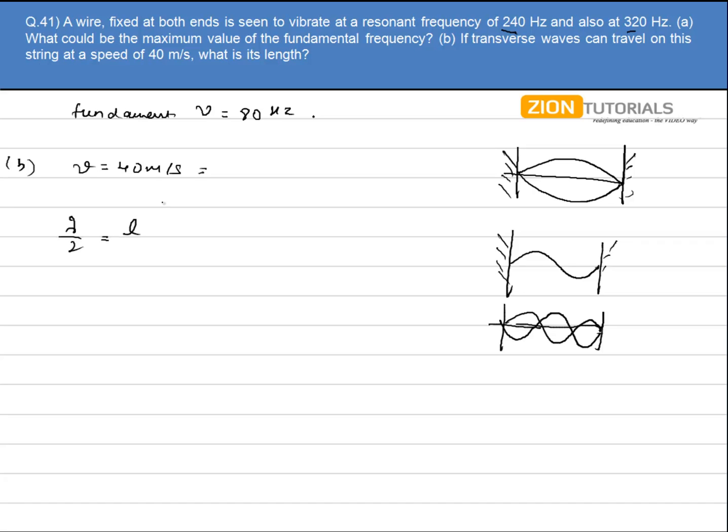Lambda comes out to be 2L, and lambda is equal to wave velocity by frequency. So it comes out to be 2L times nu. The value of the wave velocity is given to me as 40 meters per second, and frequency is 80 Hz.